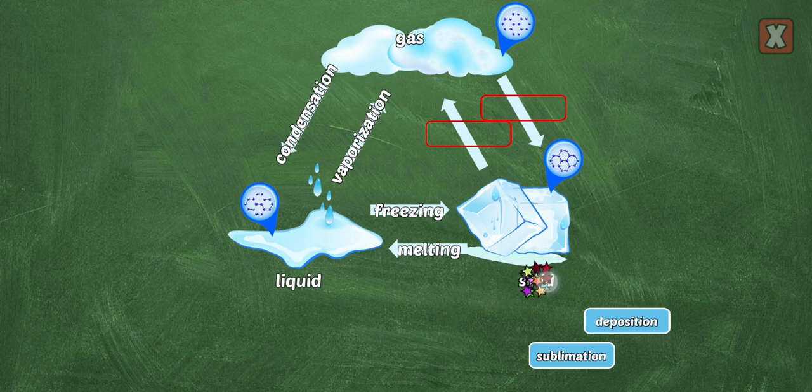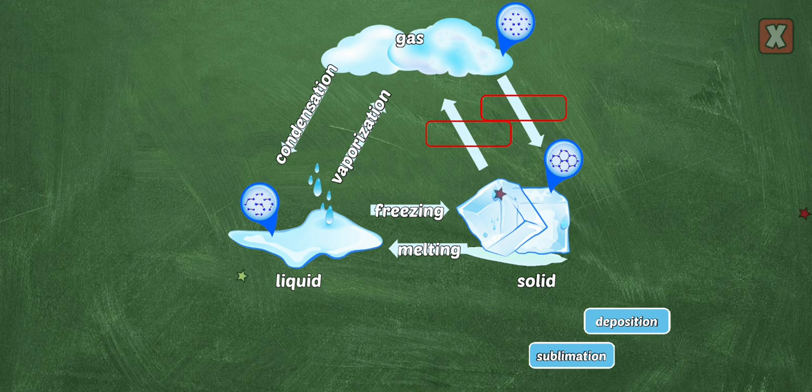Solid. In a solid, molecules are held tightly together and don't move easily. For example, ice is a solid.